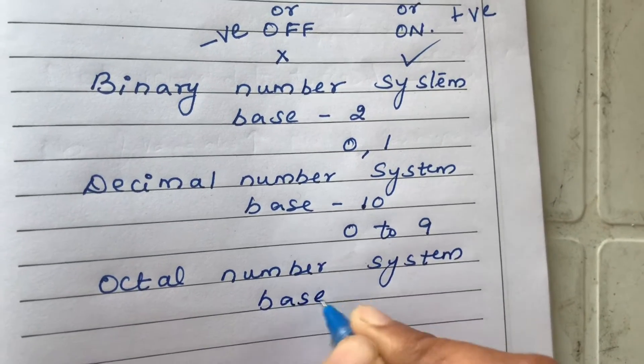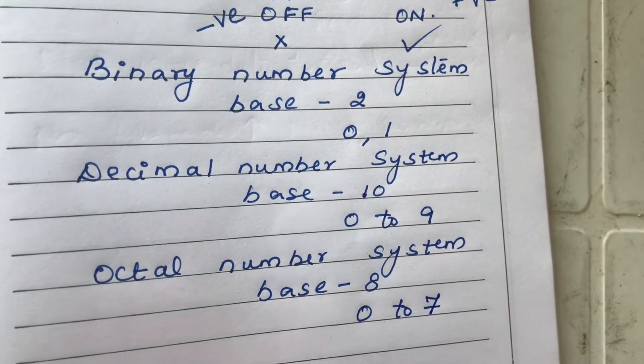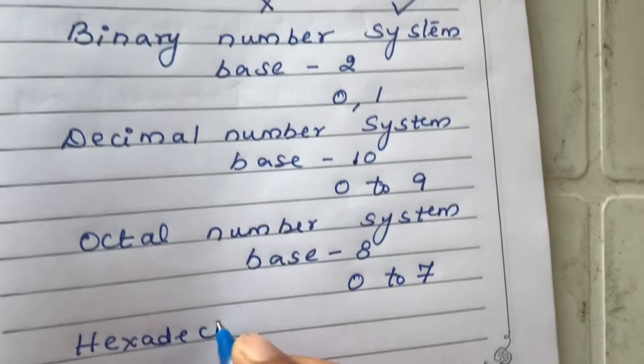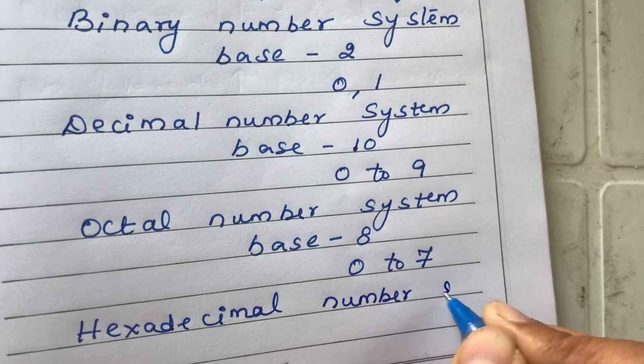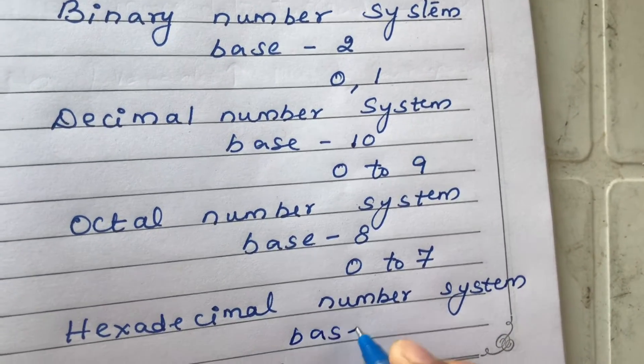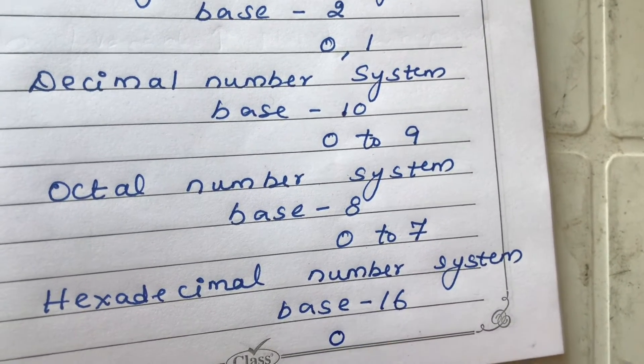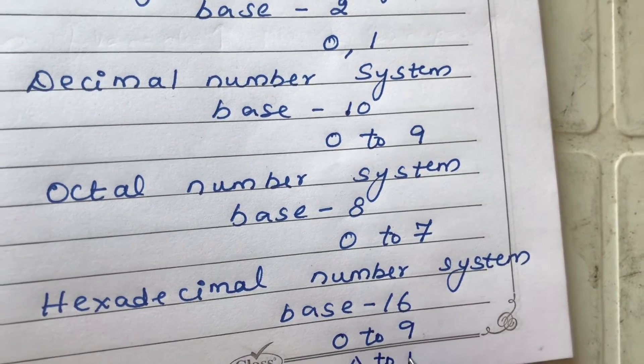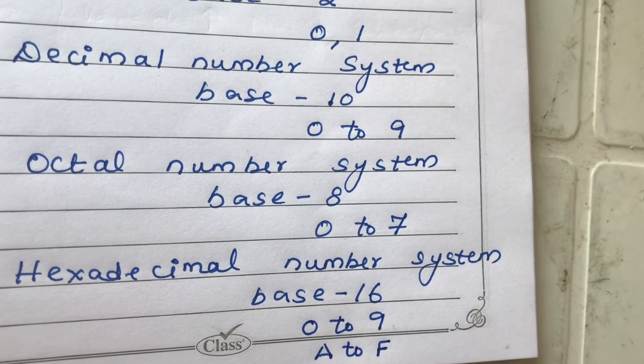Similarly, for hexadecimal number system, the base is 16 and it starts from 0 to 9 and then from A to F. Hope you understand this.